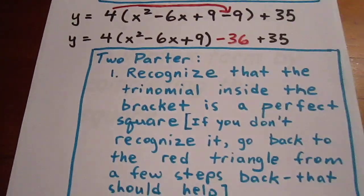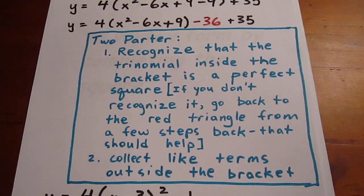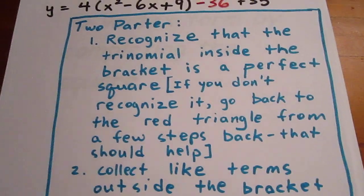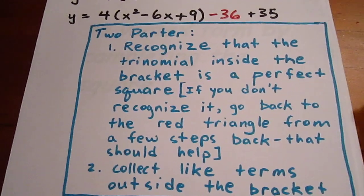At this point, we have a two-parter. We recognize that the trinomial inside the bracket is a perfect square. And if you don't recognize it at this point, you go back to the red triangle.